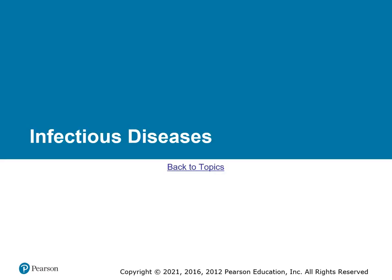The first topic is infectious diseases. Please review the anatomy and physiology of the parts of the body that help defend against infection, such as the immune and lymphatic system, the blood, and the integumentary system, or the skin. Also review the anatomy and physiology of parts most susceptible to infection, such as the skin, the respiratory system, and the GI system.